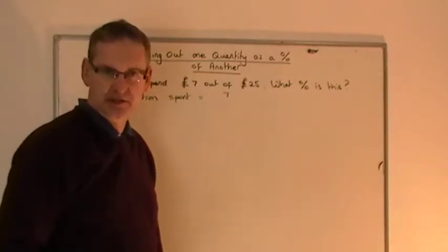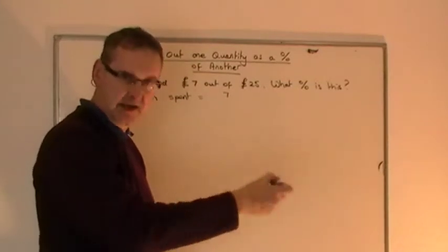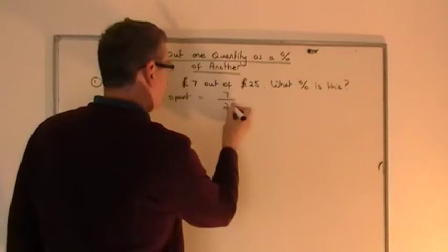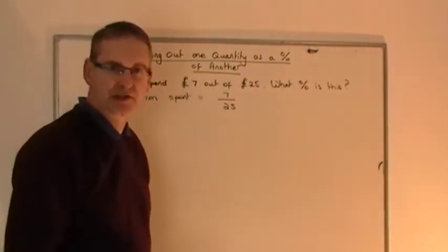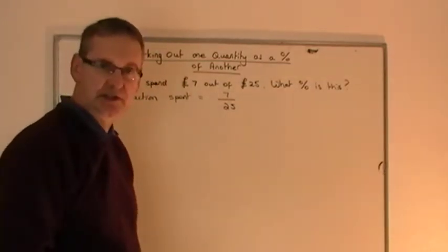So the fraction that is spent will simply be £7 out of the £25. If I was marking a test and somebody scored 7 out of 25 what would I write on the test script? I'd write 7 over 25 and that's exactly what I write here. £7 has been spent out of £25 they started with. So we've got a fraction of 7 25ths that's been spent.